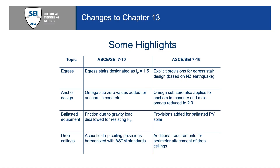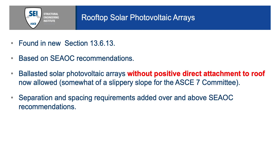In ASCE 7-10, we worried about egress, and what we did was designate an ICP of 1.5. Now we have explicit provisions in ASCE 7-16, but for the solar panels, they're in Section 13.6.13, based on recommendations that were created by the Structural Engineering Association of California. These are ballasted arrays, so there's no direct attachment to the roof.